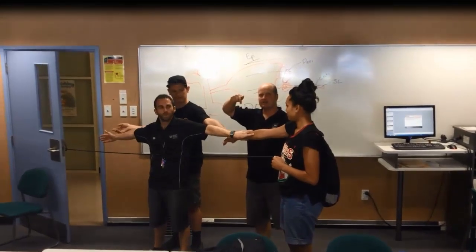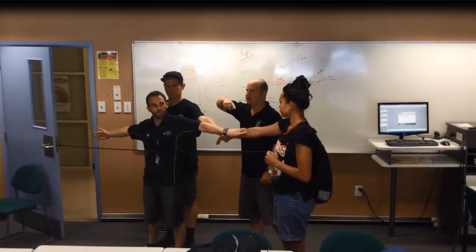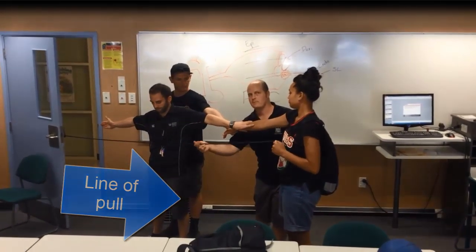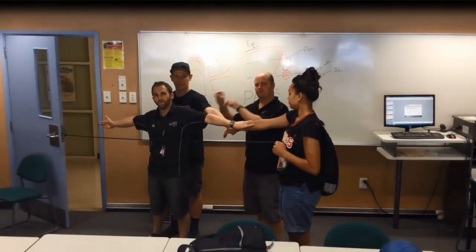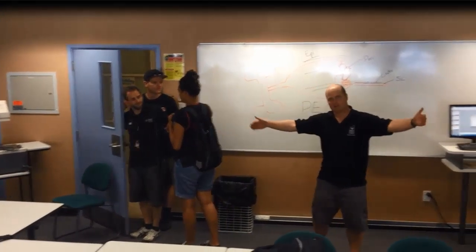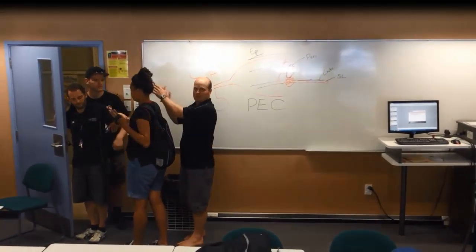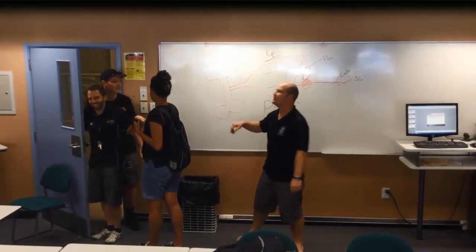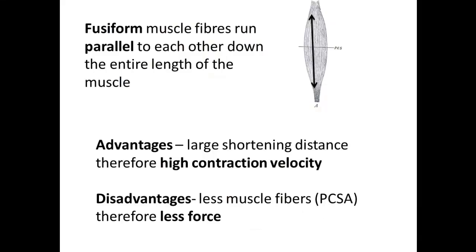Here we have two muscle fibers that are in line and parallel to the line of force — this arrangement is called fusiform. When they contract, they can shorten over a large distance, making them fast. However, with only two muscle fibers in that space, they are weak. Recap: fusiform fibers run parallel down the entire muscle length; advantage is large shortening distance and high contraction velocity; disadvantage is fewer muscle fibers — smaller physiological cross-sectional area — and therefore less force generation.